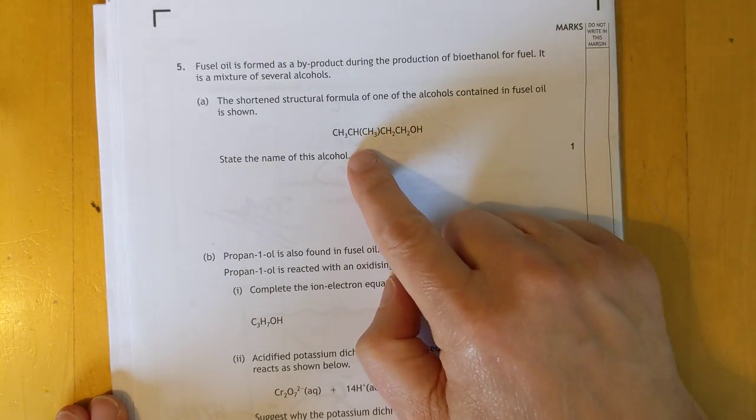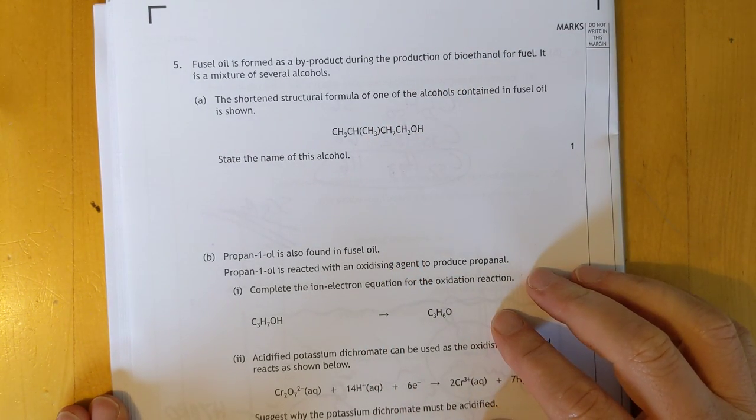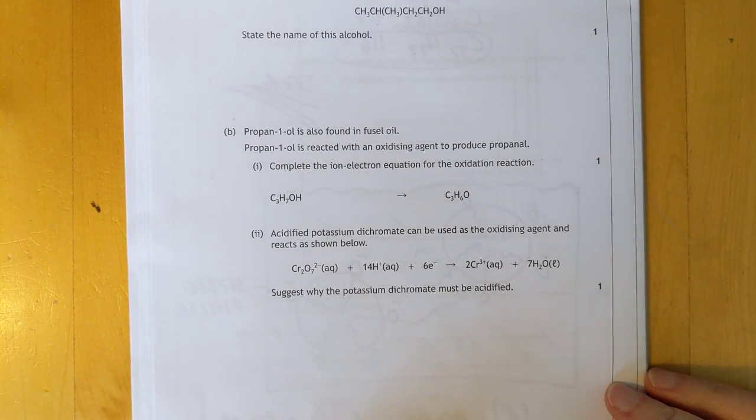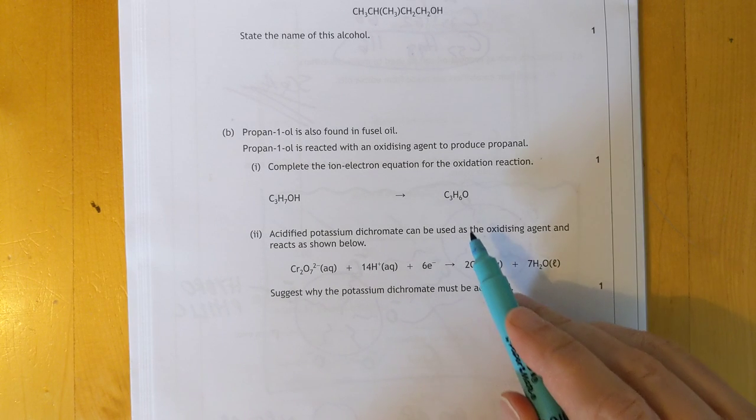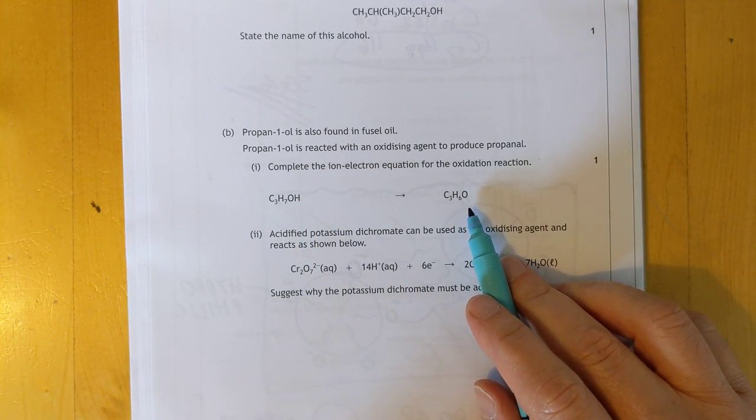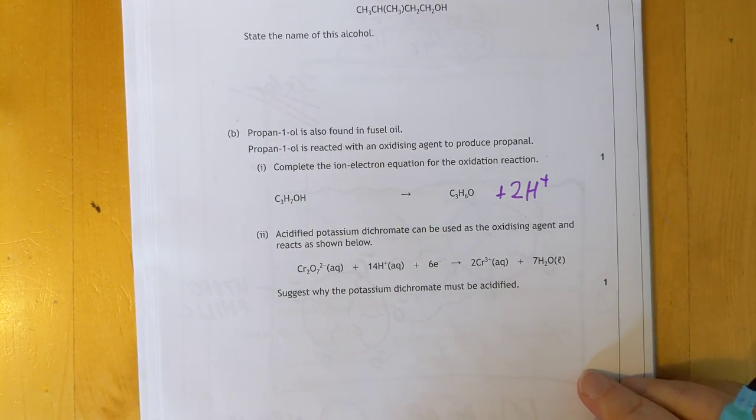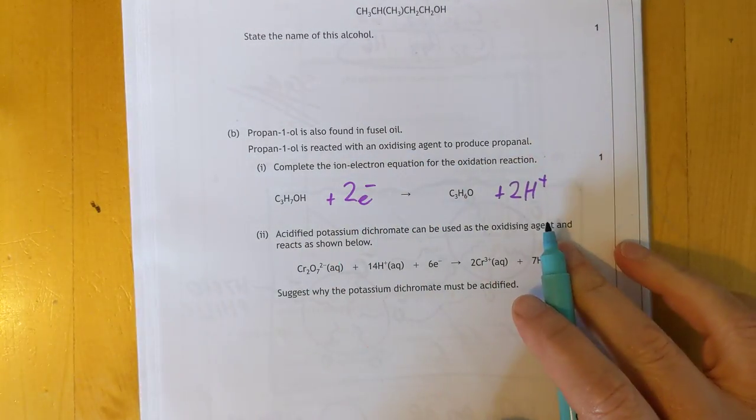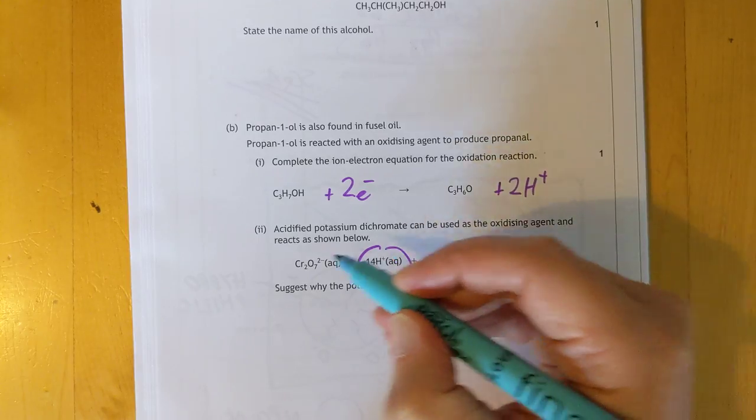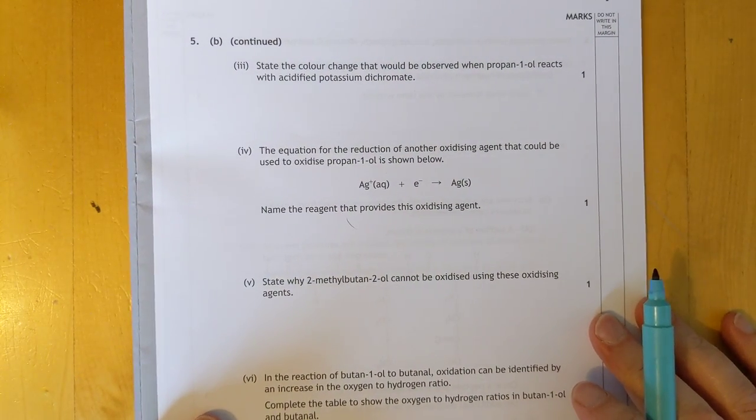State the name of this alcohol. So one, two, three, four. So it's butan-1-ol and the methyl group is on one, two, three. Three-methyl butan-1-ol. That's easy. Propan-1-ol is also found in fusil oil. Complete the ion-electron equation. So, stage one, balance the non-oxygen element, which is carbon is balanced. Stage two, balance oxygens by adding water. You don't need two. The oxygens are balanced as well. Stage three is balance the hydrogens by adding hydrogen ions, which means you'll need two hydrogen ions on this side. And lastly, you need to balance the charges so they're the same. So that would be two electrons.